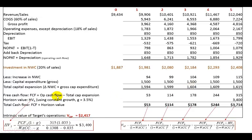Free cash flow is the difference between operating cash flow and total capital investment. For example, subtracting 1,594 from 1,648 gives 53; subtracting 1,599 from 1,713 gives 114; and so on for each of the five projected years.